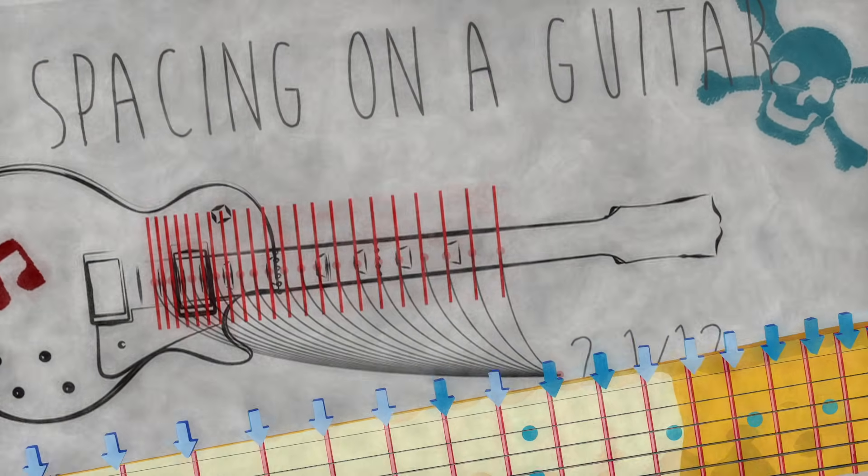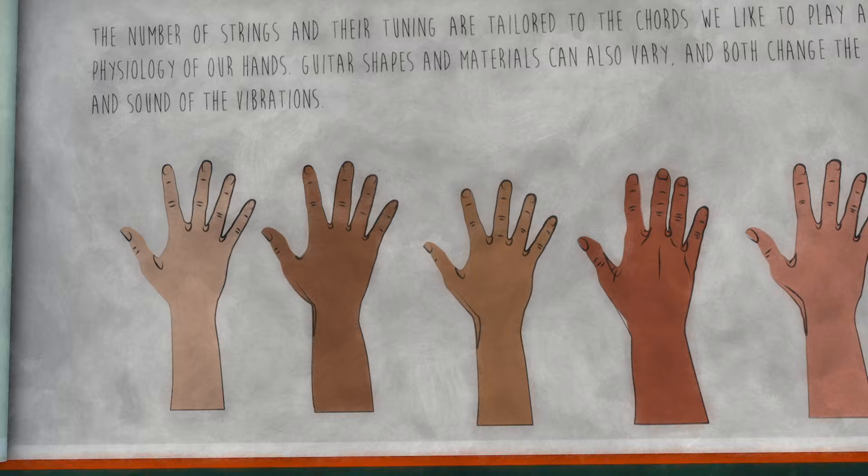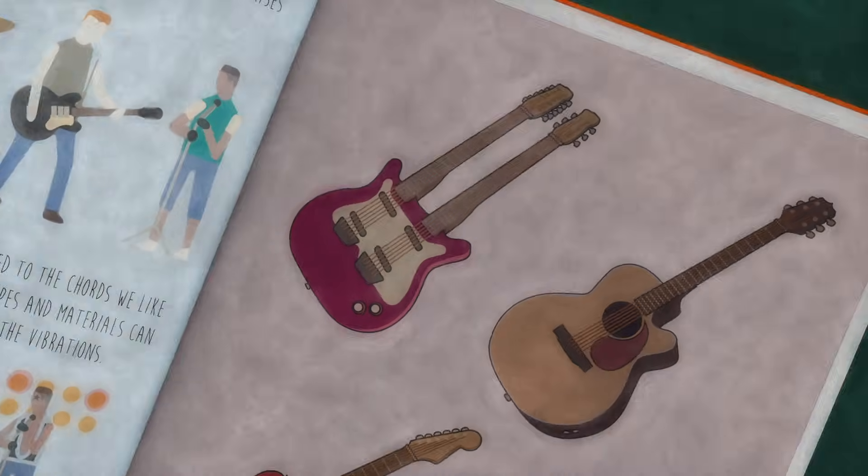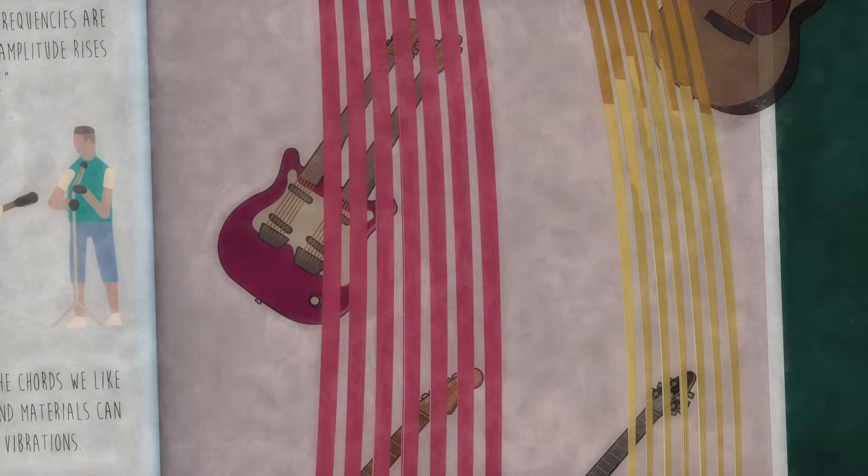The number of strings and their tuning are custom-tailored to the chords we like to play and the physiology of our hands. Guitar shapes and materials can also vary, and both change the nature and sound of the vibrations.